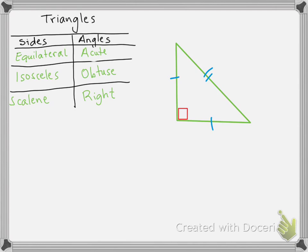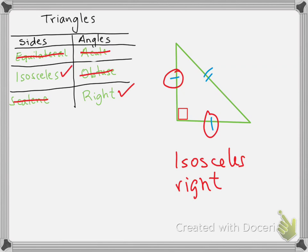So let's look at this example. We have a triangle that has two congruent sides — two equal sides — and this one is different. And then we have a right angle right here. So what is the name of this triangle? Does it have three equal sides? No. Does it have two equal sides? Yes. Does it have three acute angles? No. Does it have one obtuse angle? No. Does it have a right angle? Yes. So the name of this triangle is isosceles right, or right isosceles, as you prefer to call it.